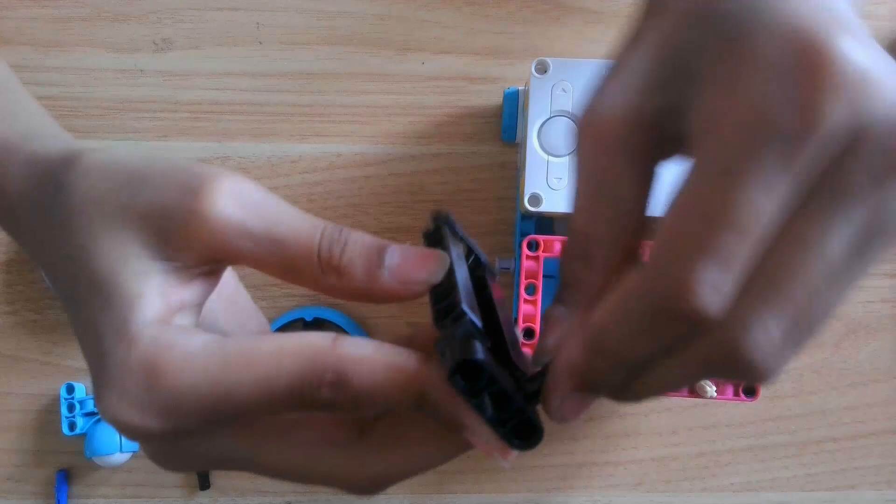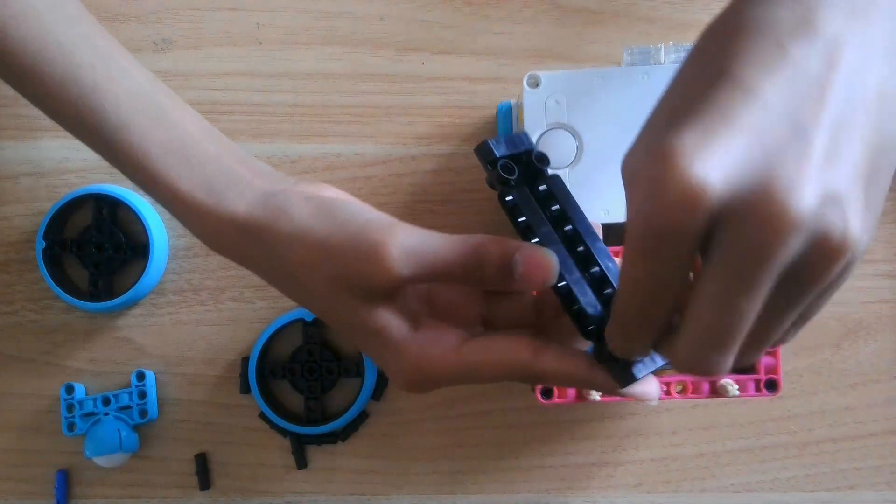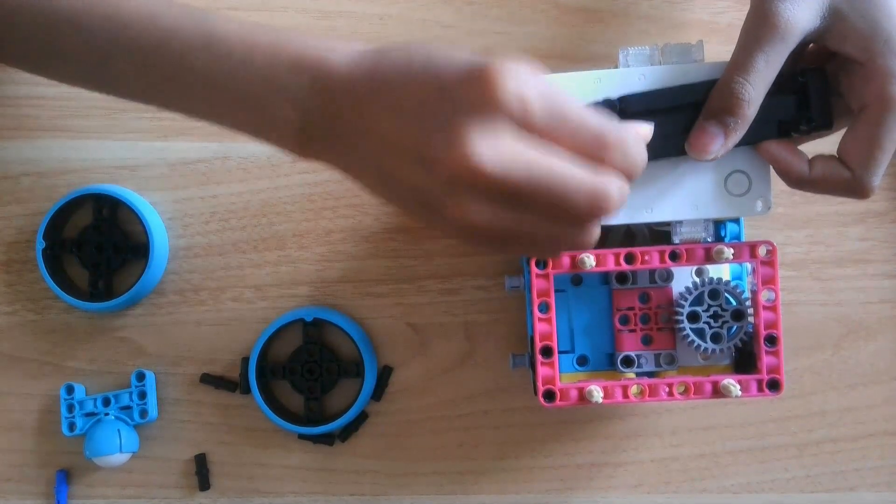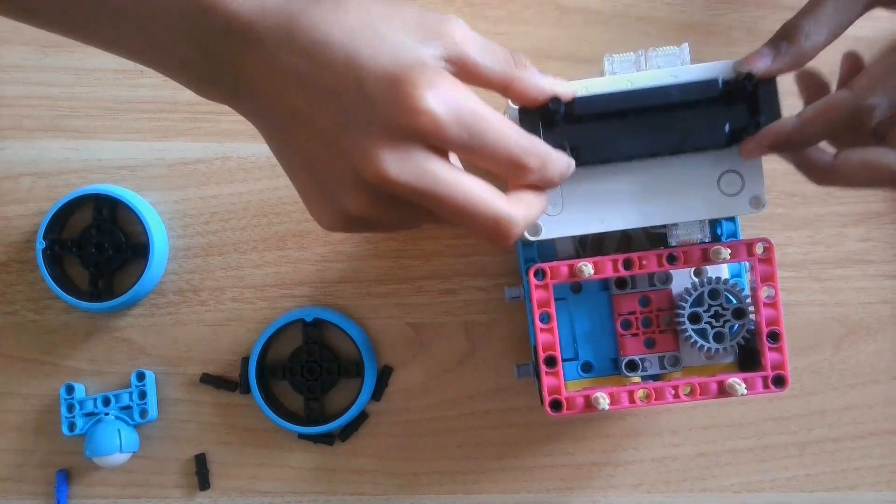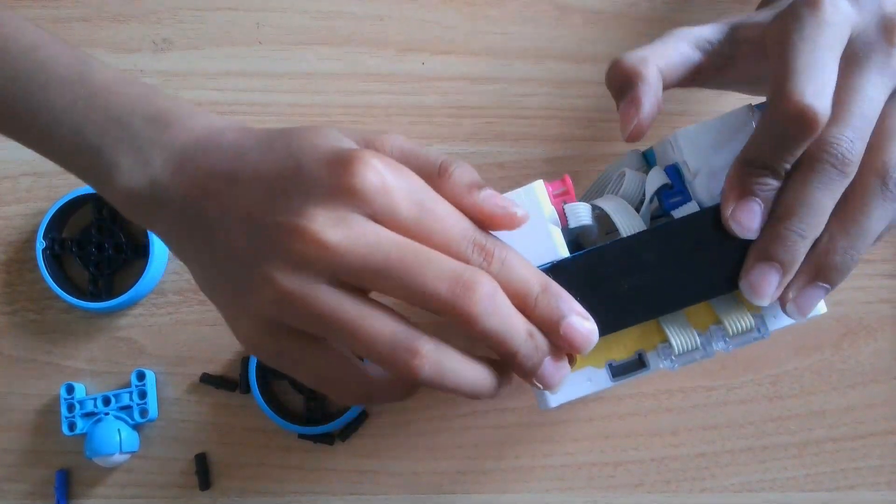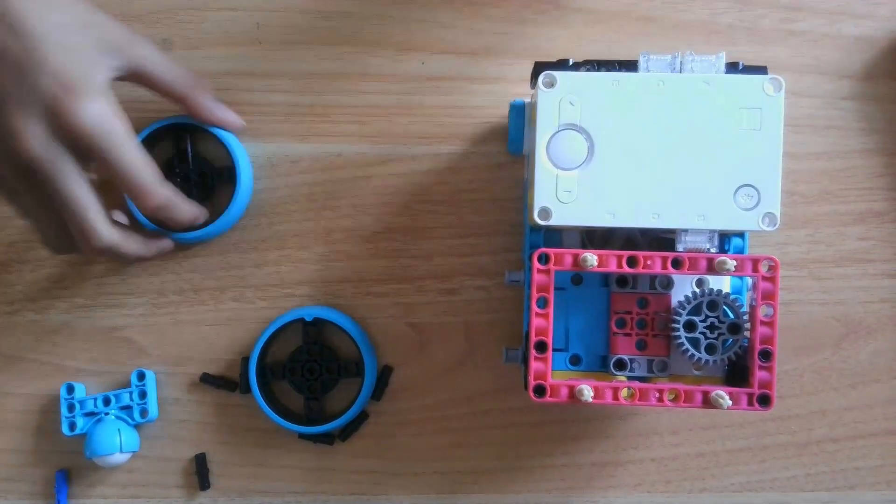Now, before we move onto the wheels and castables, you're going to want to get this panel and assemble it like so. There's four pins facing inwards. Then you're going to want to flip the robot and put the panel here to make sure none of the wires go loose.